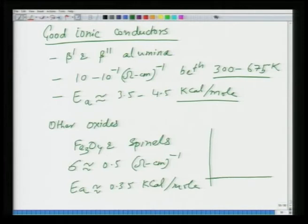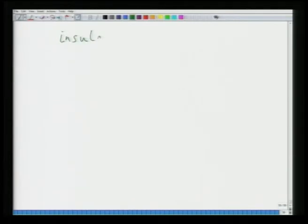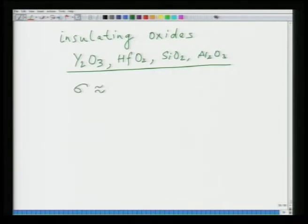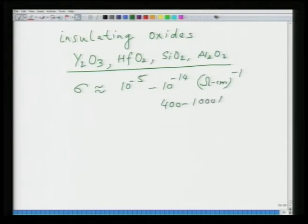For Fe₃O₄ and spinels with such a small E_A, a plot of log σ vs 1/T would be almost flat — nearly temperature independent behavior. In contrast, insulating oxides like yttrium oxide, hafnium oxide, silicon oxide, or aluminum oxide have conductivities in the range 10⁻⁵ to 10⁻¹⁴ Ω·cm⁻¹ over about 400–1000 K, with mixed activation energies.